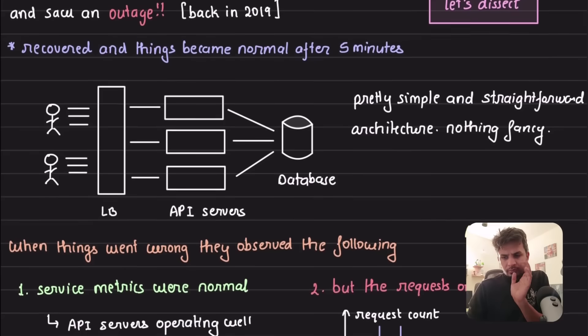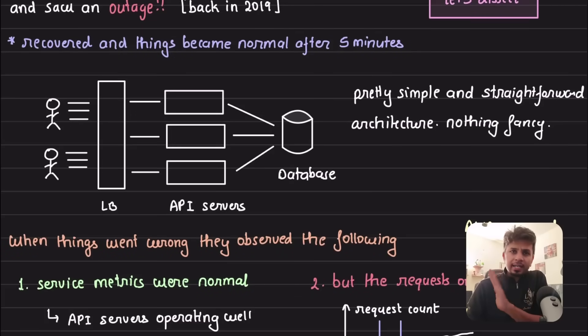First thing first, architecture is really simple - a standard 3-tier architecture. Bunch of clients connecting to a load balancer, load balancer balancing the load across API servers and there is a database. Pretty simple straightforward nothing fancy.